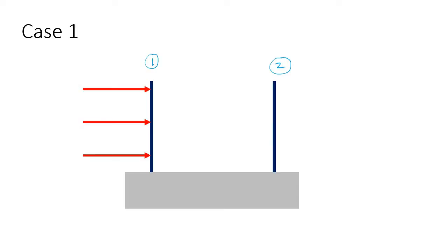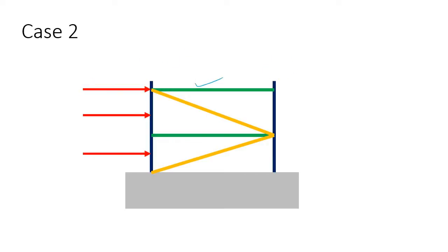In Case 1, the lateral load is acting on column one only. What will happen? Definitely this column is going to buckle heavily, while column two is going to be unaffected. As a result, you need to use a huge member size for column one but a very small column size for column two.